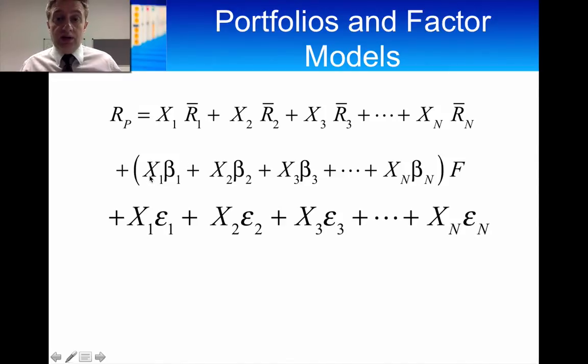And to arrive at the contribution of the factor risk to the overall return, you have a weighted average of the individual asset factor risk exposures in that portfolio. And then you've got the third component, which is the unsystematic risk component. And you just have a weighted average of the unsystematic risks of each of the assets in the portfolio.